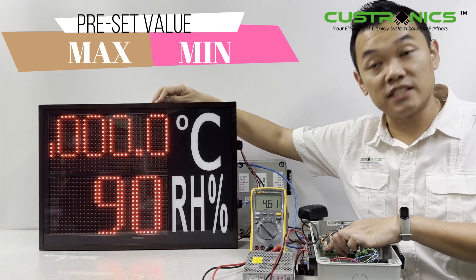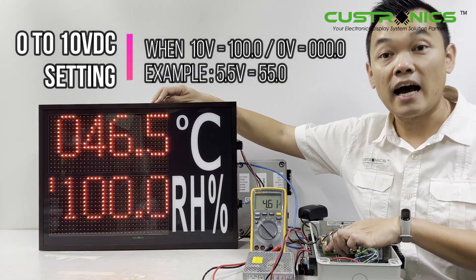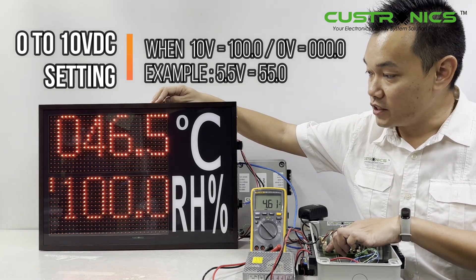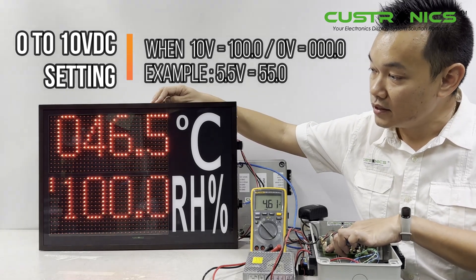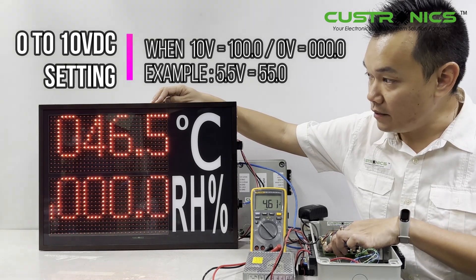For the minimum, we put 0. Press and hold button one again. This shows the high value, 0 to 100. The minimum is 0. Press and hold again.